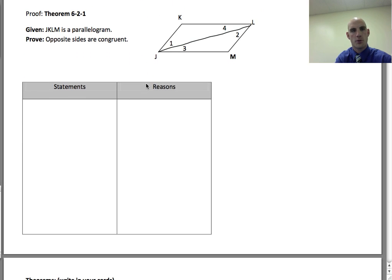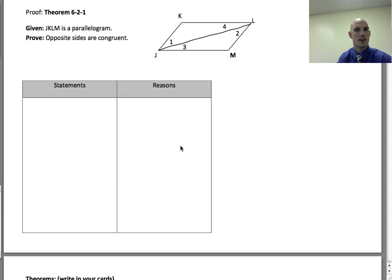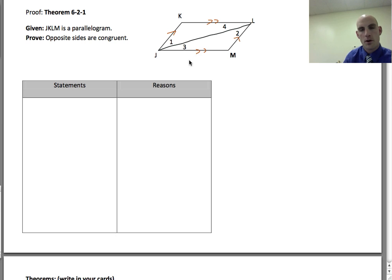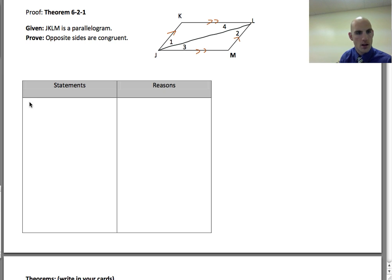Let's prove Theorem 6.2.1. JKLM is a parallelogram — I'm going to mark it. We've drawn a diagonal and we want to prove that the opposite sides are congruent. My first step: JKLM is a parallelogram. That's given — information that we know.